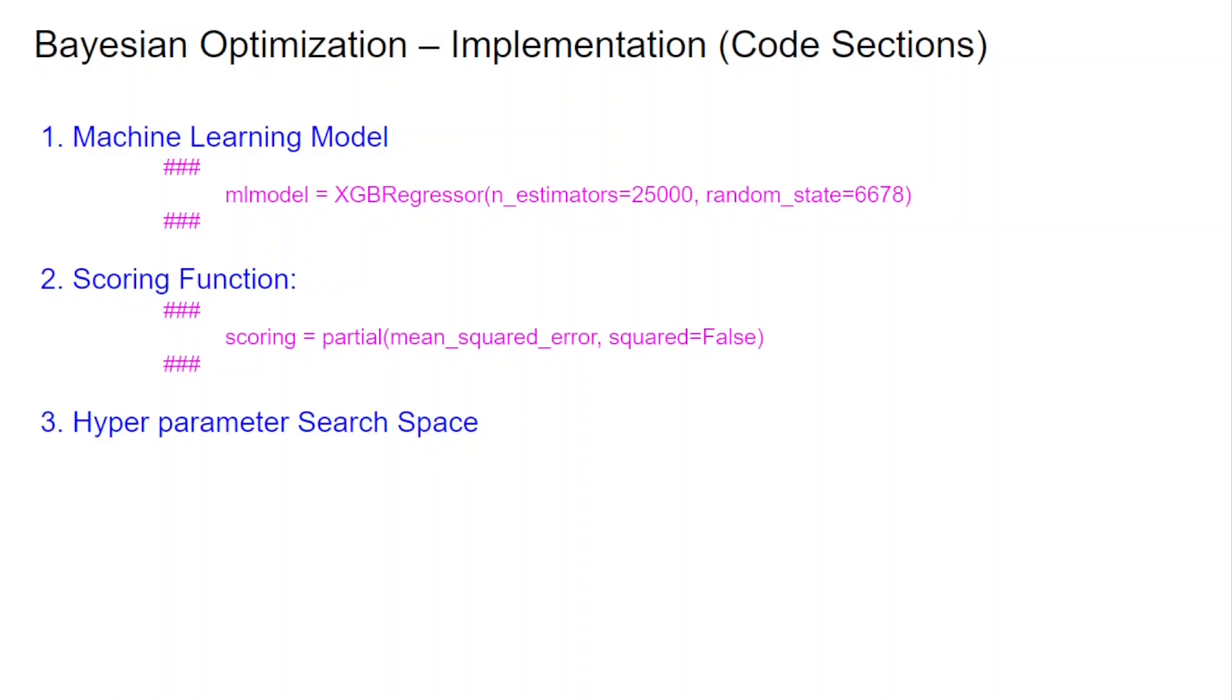Next, I have to set up the overall hyperparameter search space, which are the things I want to search. For instance, I want to have my learning rate within a certain range. So I'm defining that as I want the search to find values between 0.01 and 1.0. And I want it to be as a uniform distribution.